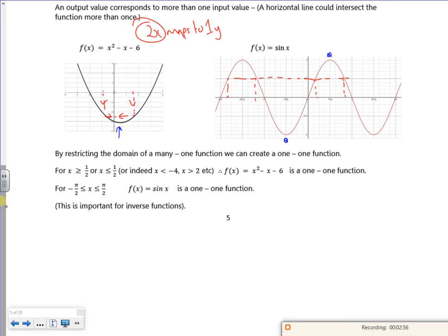So it says by restricting the domain of a many-to-one function, we can create a one-to-one function. So from there, that's now one-to-one if I just had it at bigger than the vertex. And here, if I just chose between these values here, minus 90 to 90 or minus pi by 2 to pi by 2, I've restricted it, I've made it a one-to-one function. And that's quite important for something called the inverse.